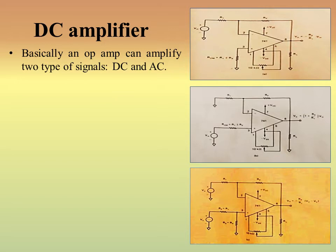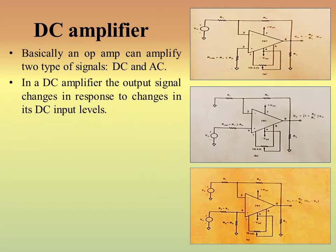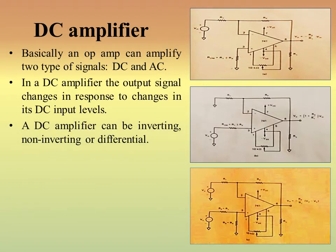An operational amplifier can amplify both DC and AC signals. For a DC amplifier, the output signal changes in response to changes in its DC input levels — if the DC input level changes, the output signal changes accordingly. A DC amplifier can be inverting, non-inverting, or differential.